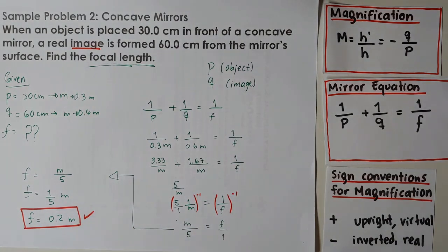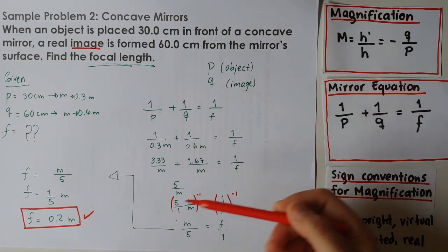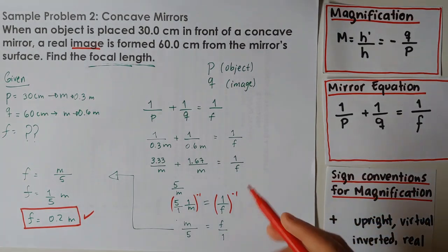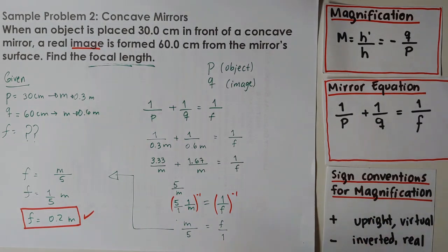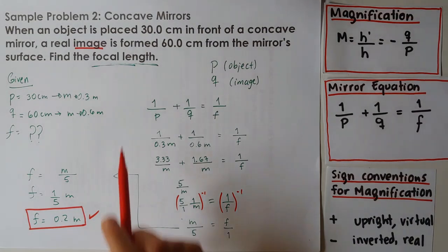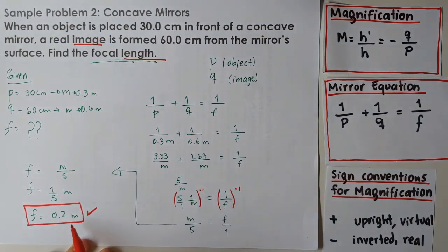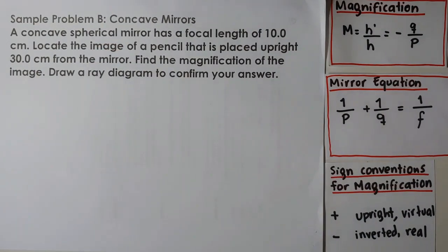And this is our final answer. Remember, the potentially confusing part is just changing the position — exchanging the 5 and the meters — or writing it as a fraction like we did here, but the answer is the same. Since the focal length is a length, it is measured in meters.